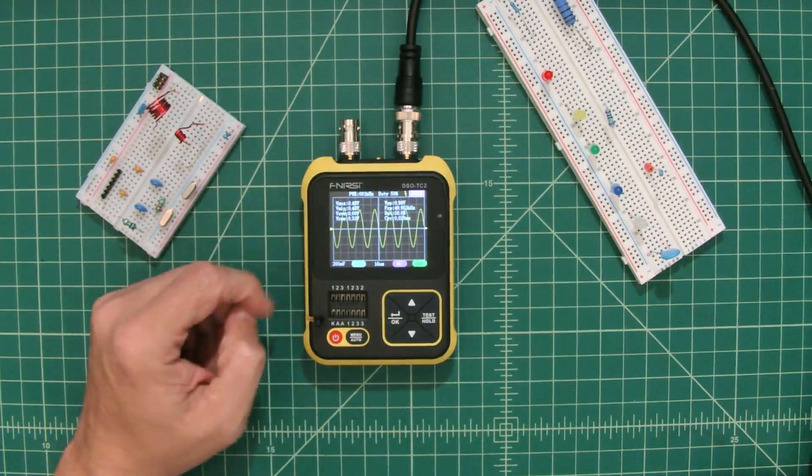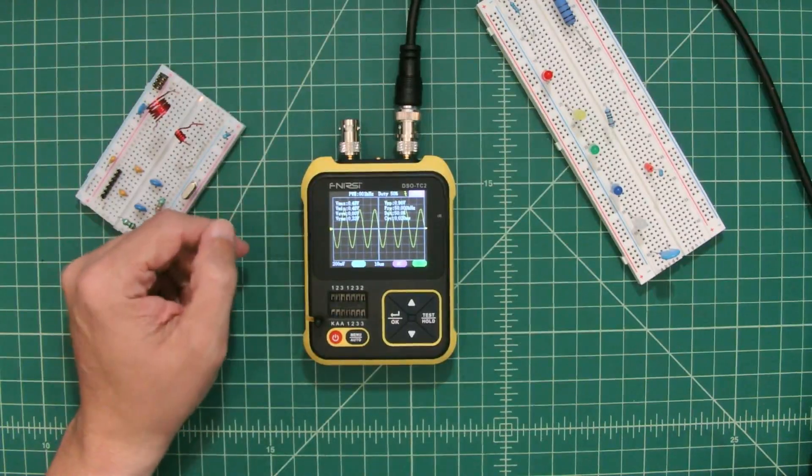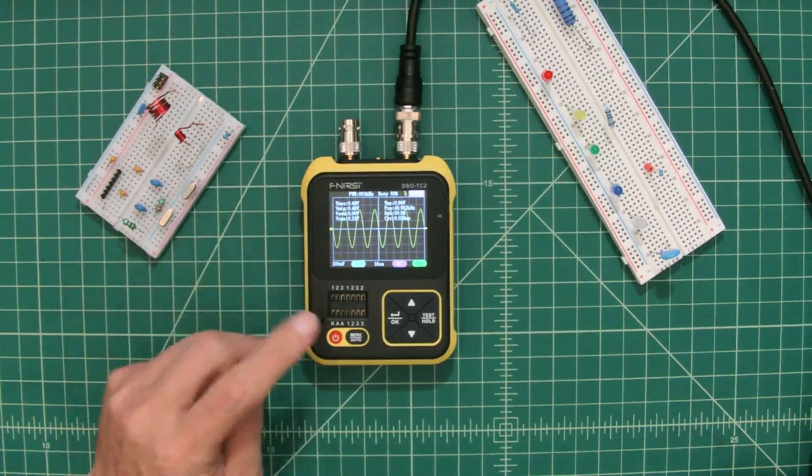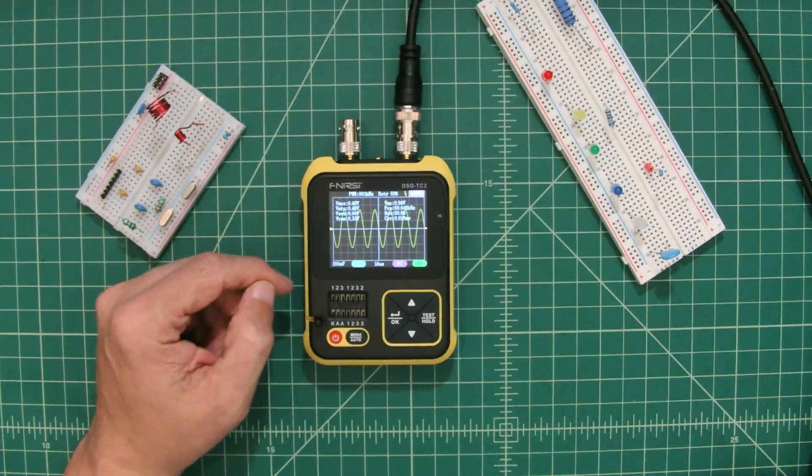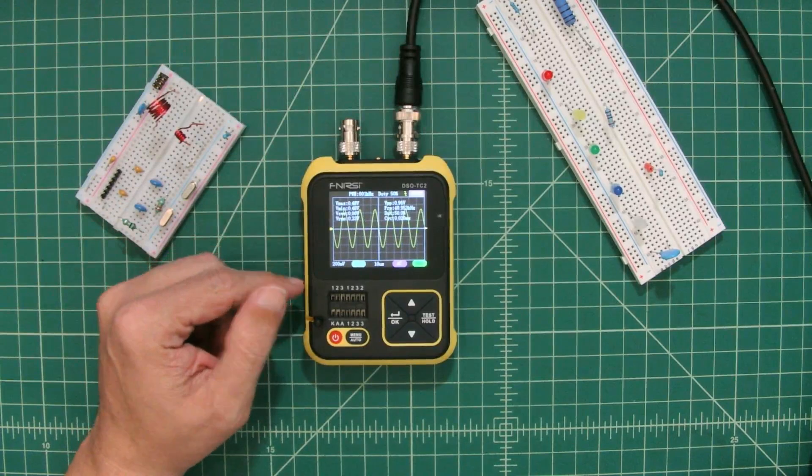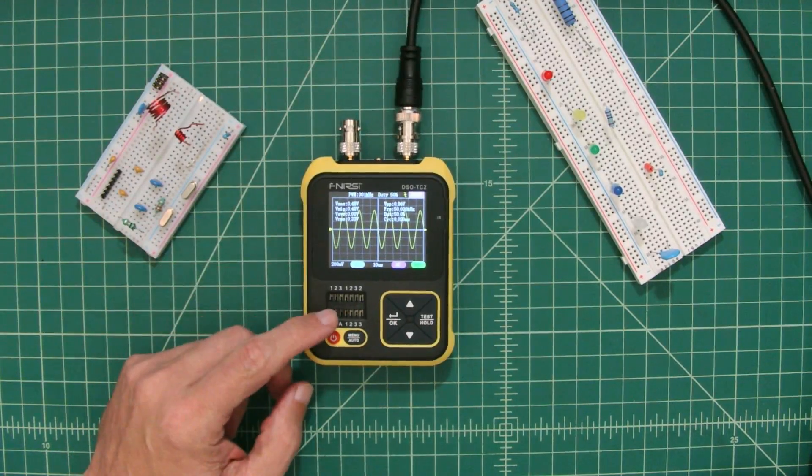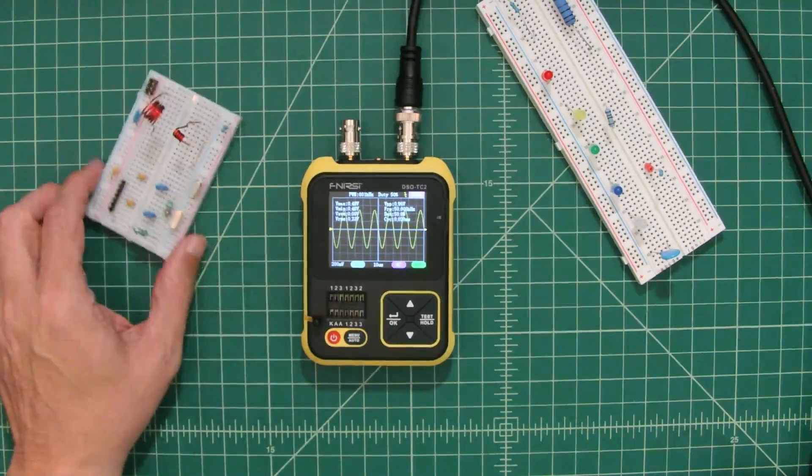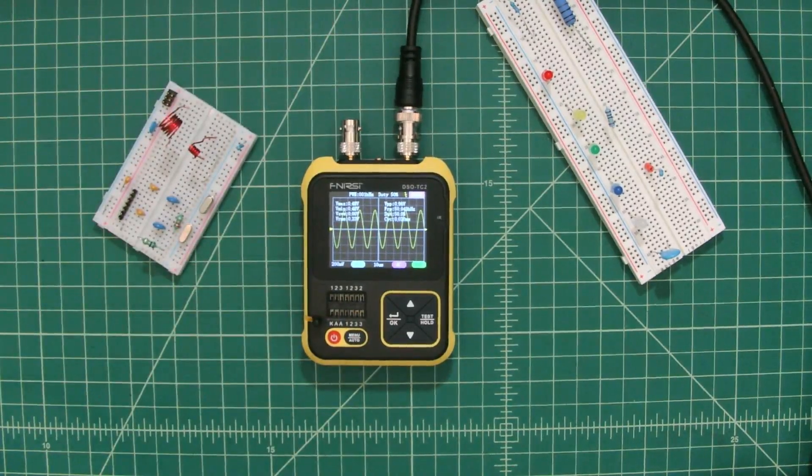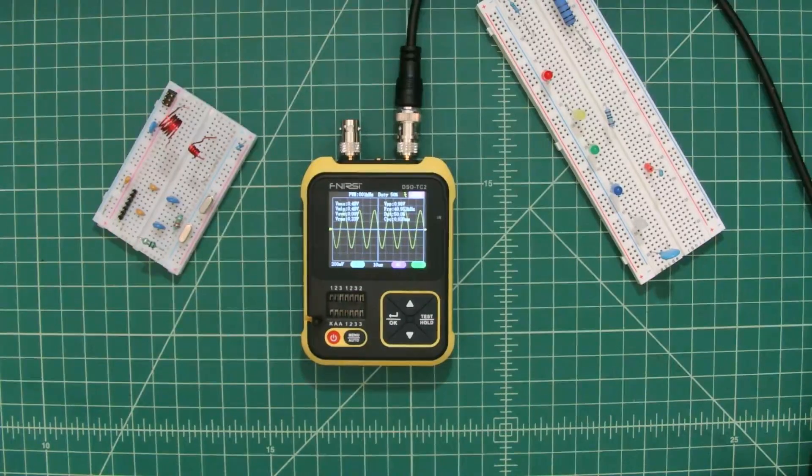All right folks, so in this video we're going to take a look at this device by Fenerse, it's the DSOTC2. It is a dual function utility that you can use at your lab bench or ham shack where it has an oscilloscope function as well as a component tester. So we're going to take a look at both, test some components, hook this up to a signal generator and see what it does.